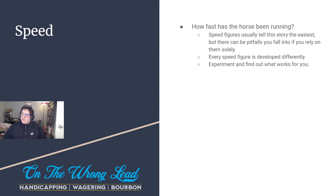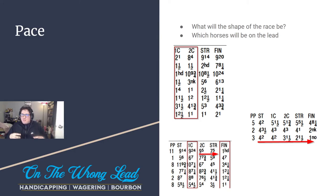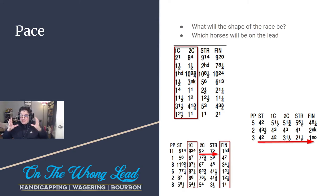And lastly, let's talk about my favorite — something near and dear to my heart. Everyone knows I love cheap speed; I love horses that get to the front. That's pace. What will the shape of the race be? Where will each of the horses be positioned? It's like a puzzle within the puzzle — who's going to be in the front, who's going to be mid-pack, who's going to be coming from the back? If I only see one or two horses wanting to be on the front and eight to ten want to come from way off, I'm betting those horses in the front.